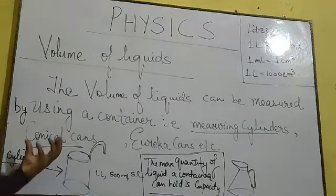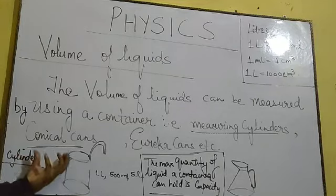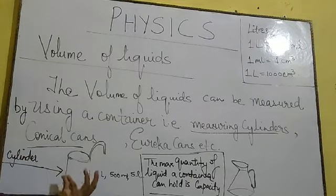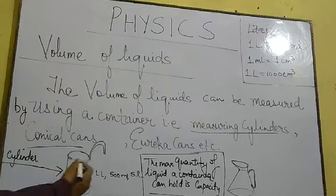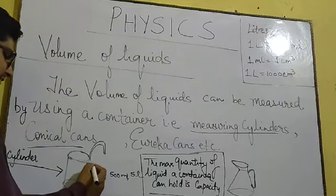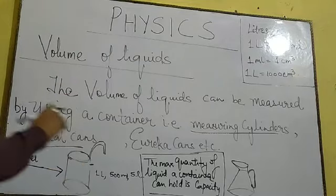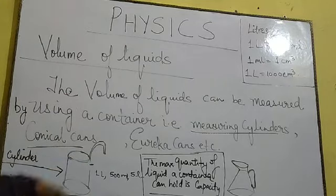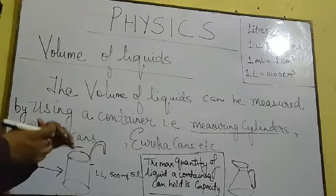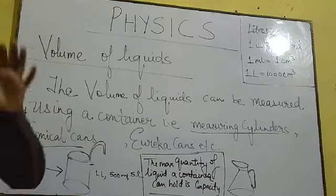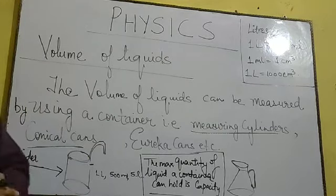The first type is a measuring cylinder, which has a particular shape into which you pour the liquid. Markings are given on it, and with those markings you can read how much amount of liquid it is holding — that is the volume of that particular liquid.